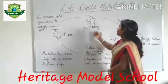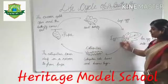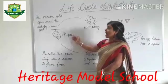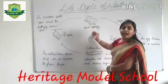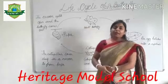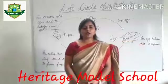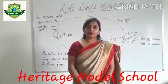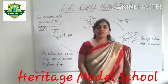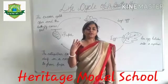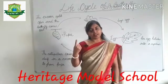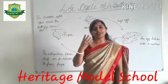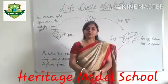So first stage is egg, then second stage is caterpillar, third stage is pupa, and fourth stage is adult butterfly. The process of changes from young one to adult is called metamorphosis. There are four stages: egg, caterpillar, pupa, and adult butterfly.